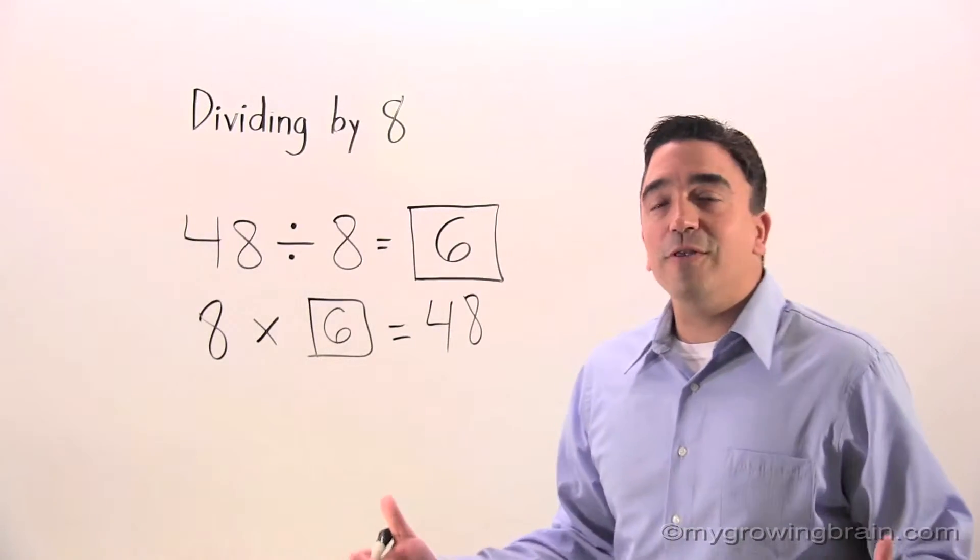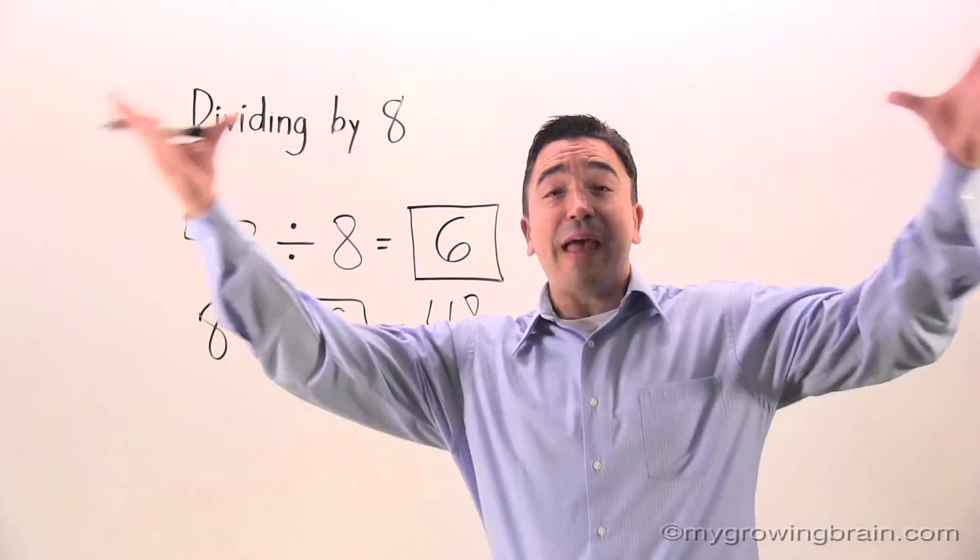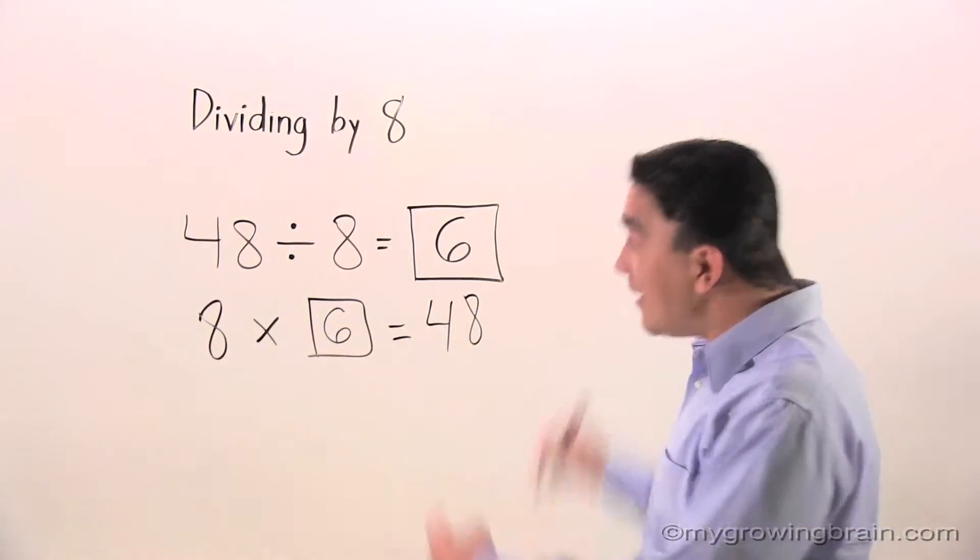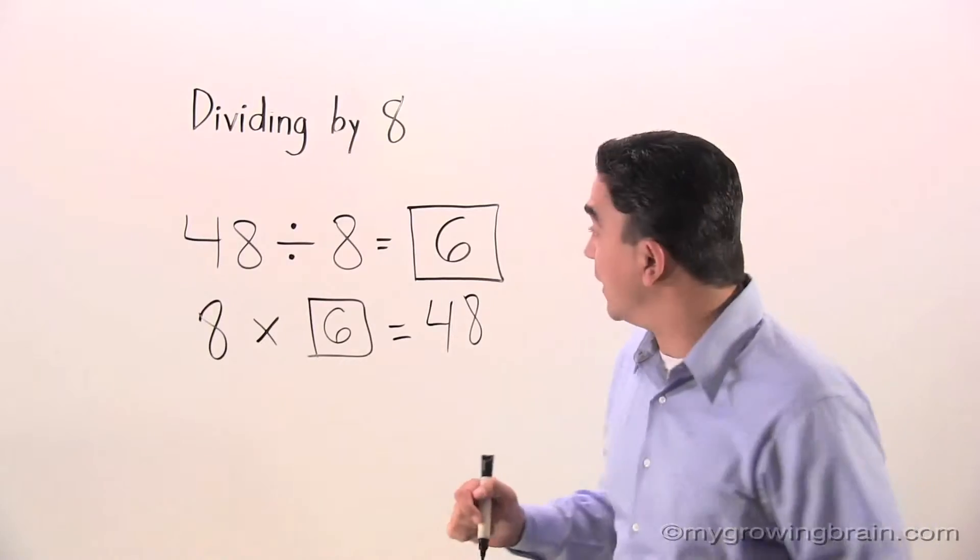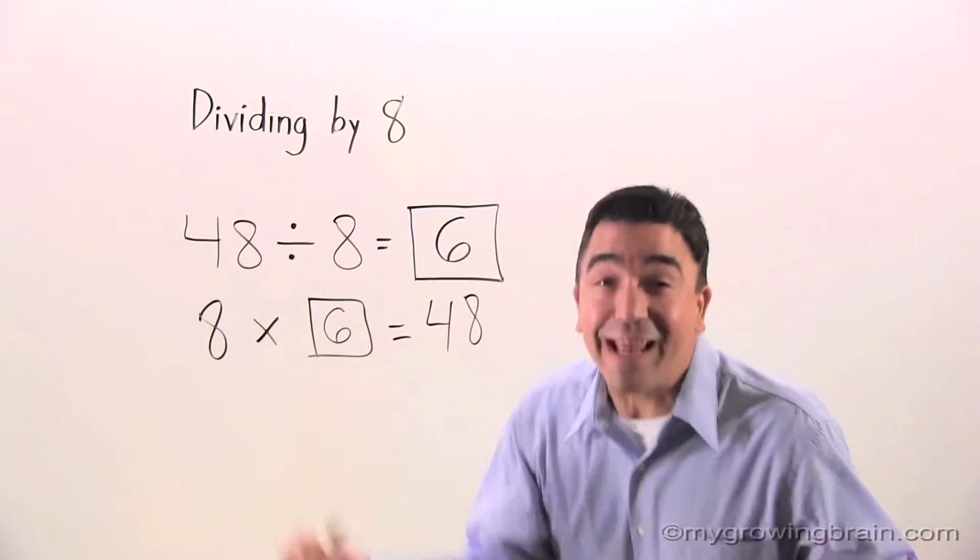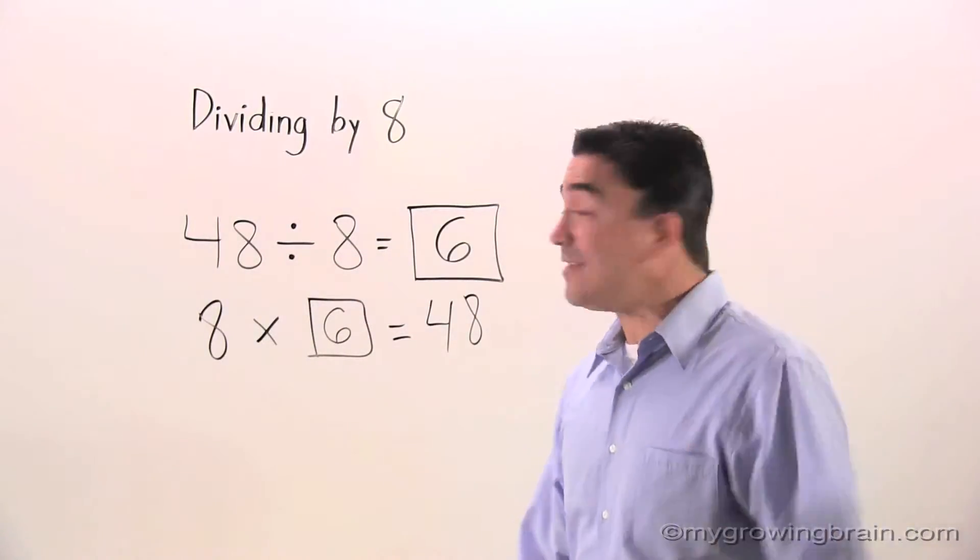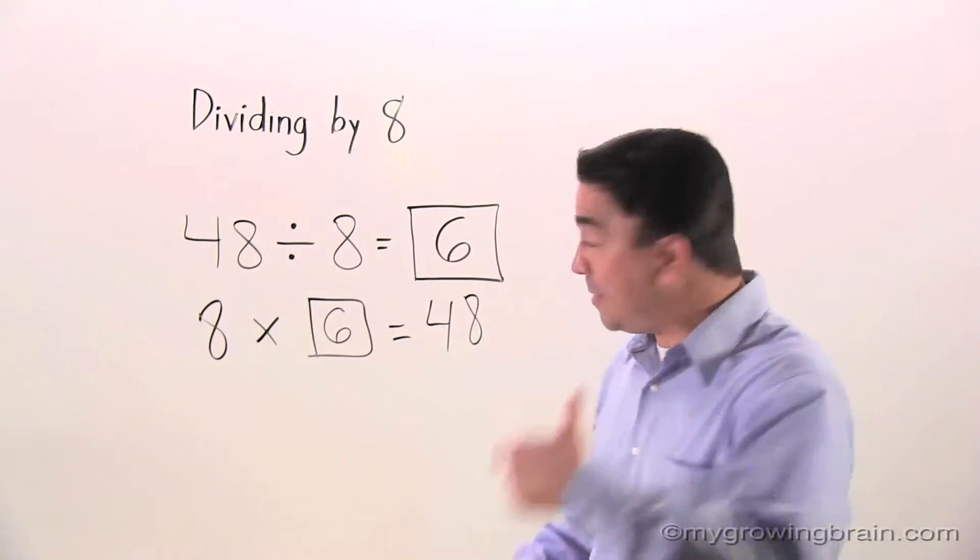But let's take this a step further because remember, we're learning this conceptually, right? Let's make a whole fact family. If 48 divided by 8 is equal to 6, then we know that 48 divided by 6 equals 8. Let me show you.